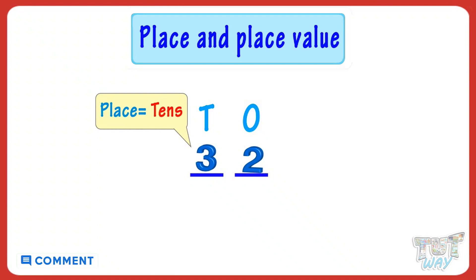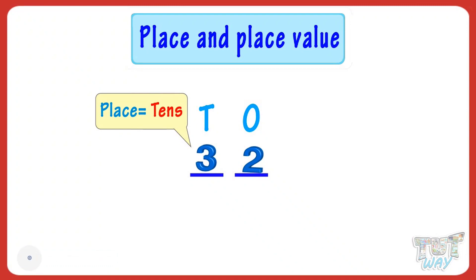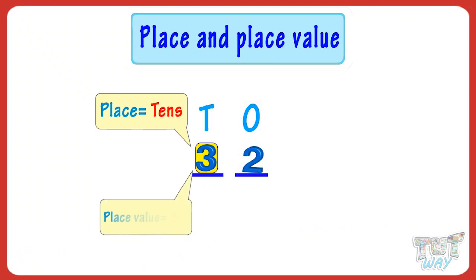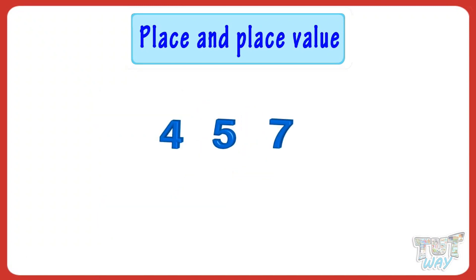Place value is how much the digit is worth, or the value it holds at that place in the number. For example, the place value of three in this number is three tens, or thirty. Let's learn the concept with more examples. We have the number four hundred and fifty-seven.